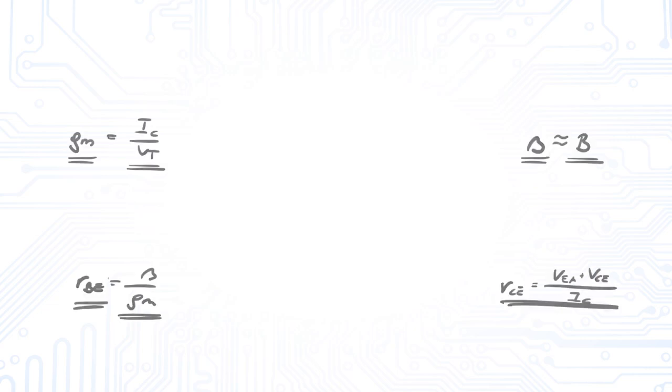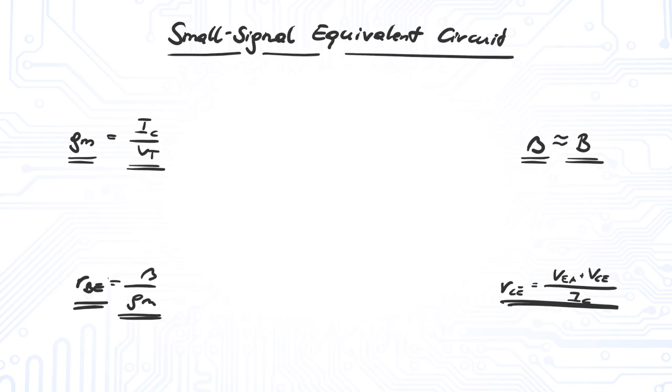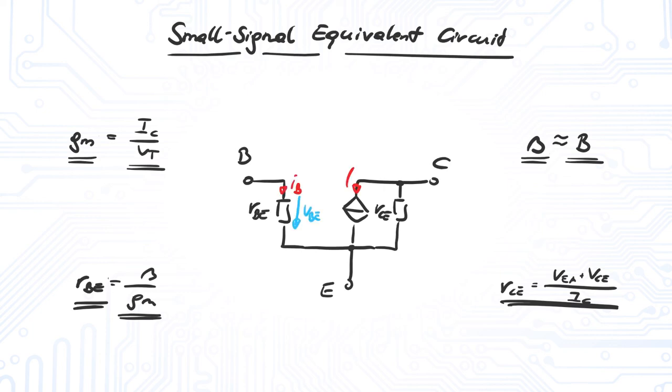All these different small signal parameters form the small signal equivalent circuit. For our circuit analysis, we simply replace the actual transistor with the equivalent circuit and apply methods like the superposition principle as usual.